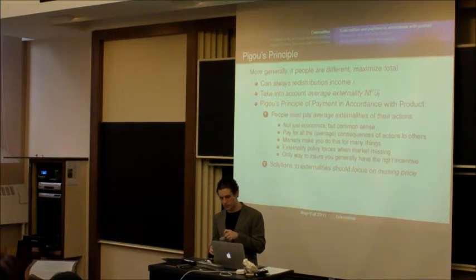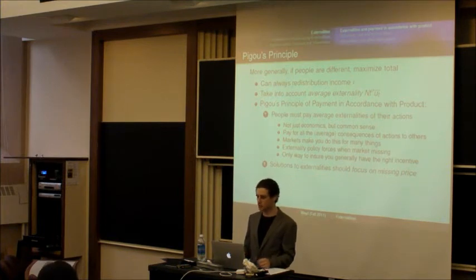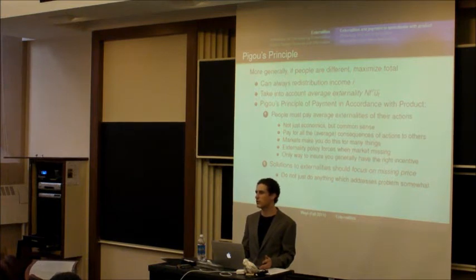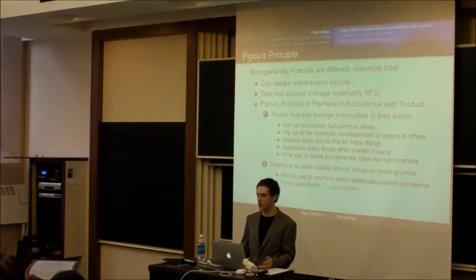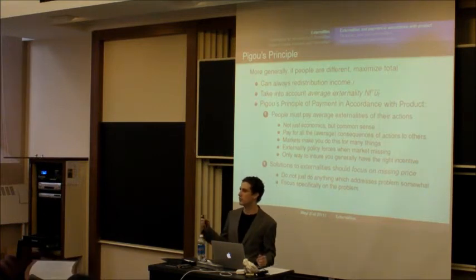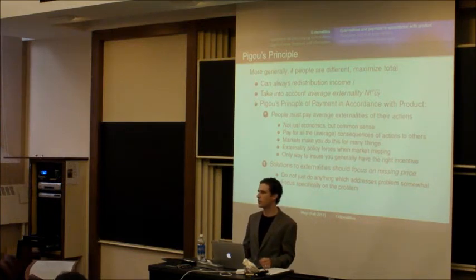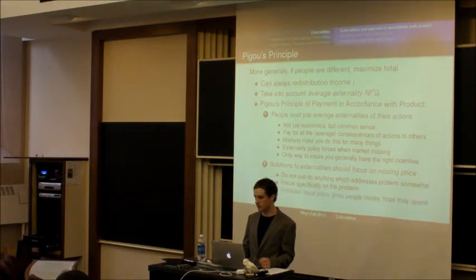And the second element of Pigou's principle is that interventions aimed at dealing with this problem should focus on the product whose price is missing. So that is, if there's global warming, there's lots of things we could do to reduce it. We could create green energy, we could reduce driving, there's many different ways. And many governments have started doing things like subsidizing green energy, subsidizing solar cells, etc. But most economists would say that that's not really the right approach. That if the problem is with too much energy being used, then the tax should fall directly on energy, directly on carbon that causes the problem rather than indirectly on other things that are related to it.